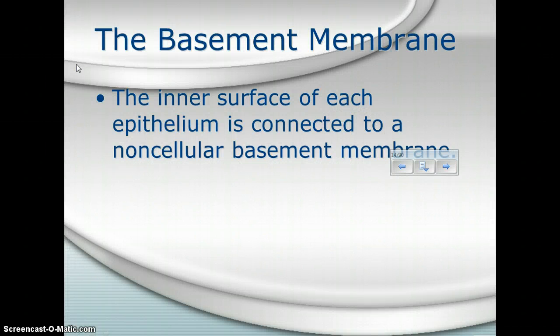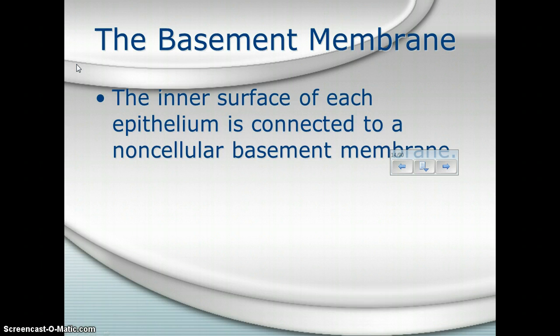Another characteristic of an epithelial surface is a structure called the basement membrane. The lowest layer of the epithelium is connected to this non-cellular structure — not another layer of cells, but a combination of proteins and other material that forms a connection between the epithelium and whatever layer of cells or tissues is beneath it. Every epithelial tissue has a basement membrane.